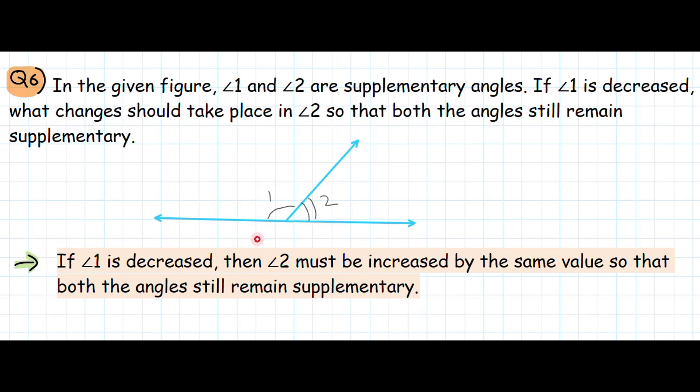Here we have two angles, angle 1 and angle 2. These are supplementary because if we add these angles we will get 180 degrees. So if we decrease angle 1, then what changes should we make in angle 2 so that these angles remain supplementary?